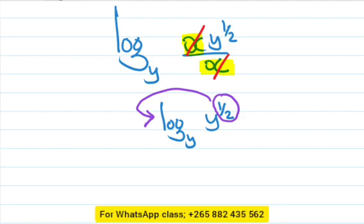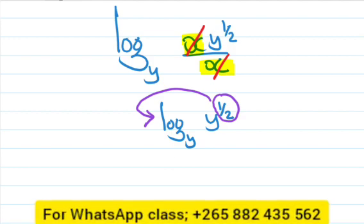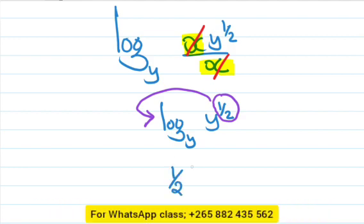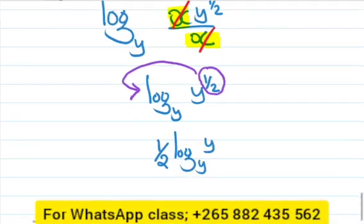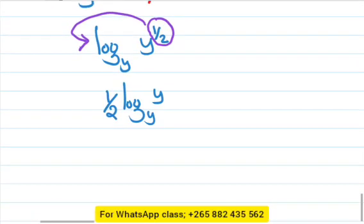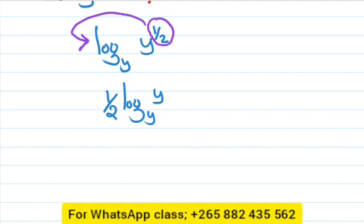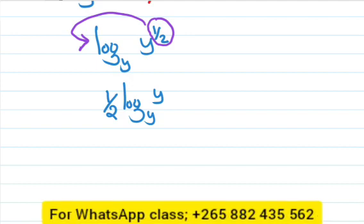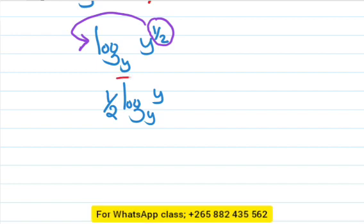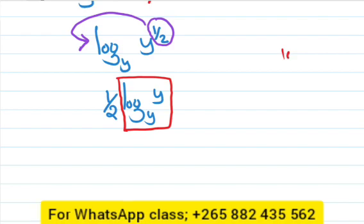From the question, we have a number in front of the log. So it will be like this: half log of y base y. If you have a log of a number whose base is equal to that number, answer is 1. So the whole of this, answer is 1.